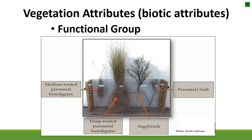Functional groups is a type of vegetation attribute that we actually measure quite a bit in rangelands. Often even when we collect plant species data we'll group it together into functional groups. Basically when we think of functional groups, we're thinking about how plants function on the landscape — where do they get their water from, how do they cycle their nutrients, and do they respond similarly to disturbance or to management? When we assign those different characteristics, we start to group plants that are functionally similar and will respond similarly on the landscape.